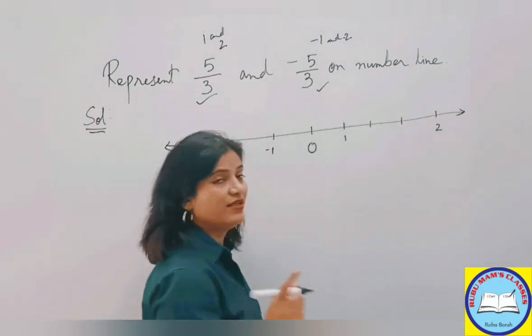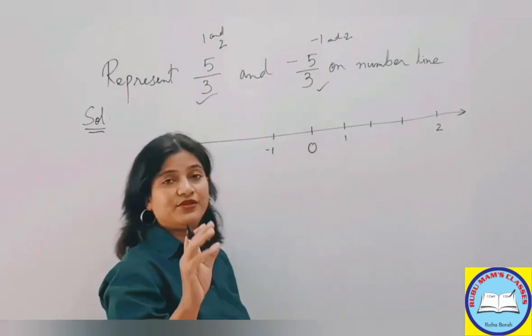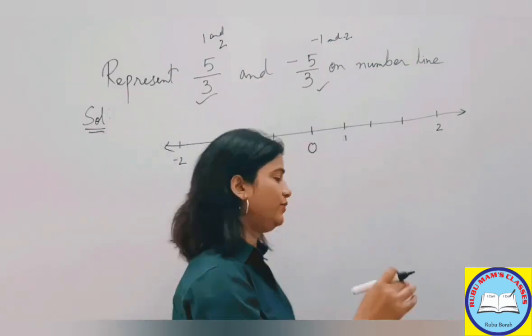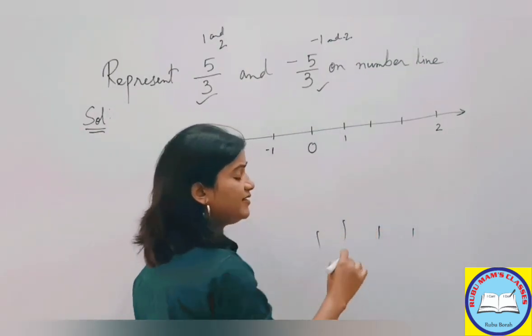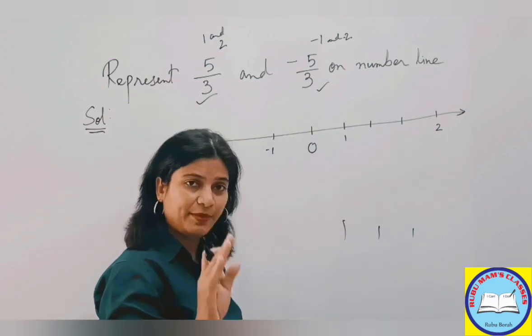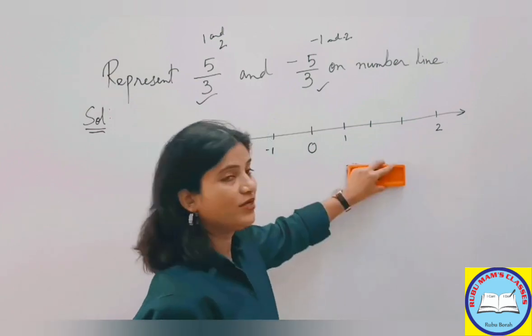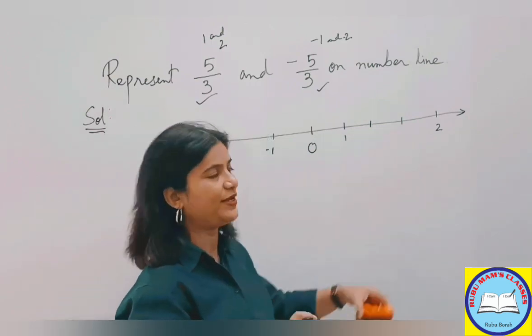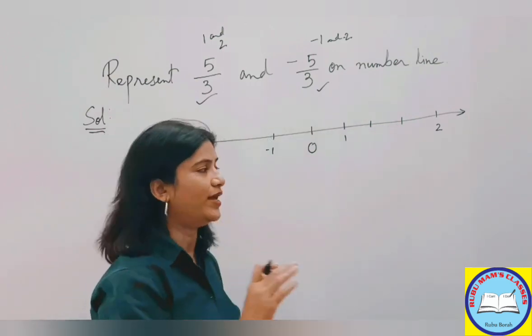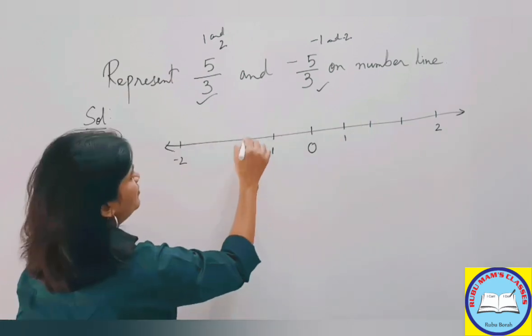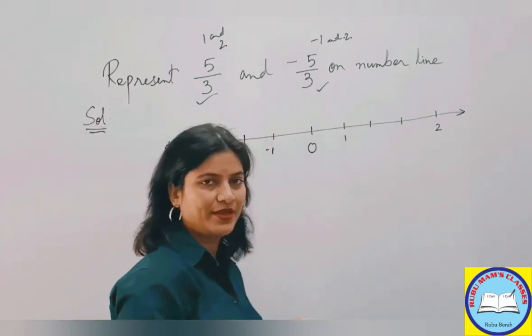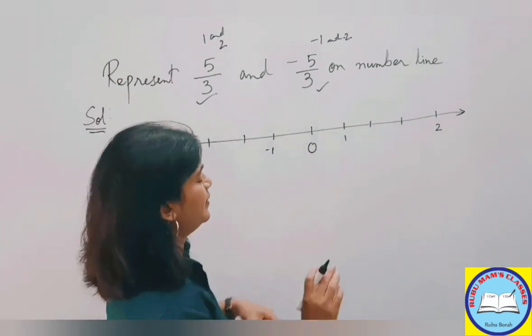Whenever you need to make 3 parts, you have to draw 2 lines. Children will make 3 lines, then you'll get 4 parts. If you want 3 parts, you have to draw 2 lines. Not only children but adults also do this mistake. You want 3 parts, so draw 2 lines. 1, 2, 3. Same way here also, 1, 2. Have you got 3 equal parts?